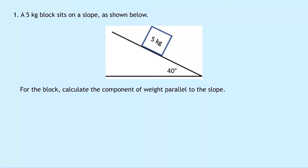Question one says that a five kilogram block sits on a slope as shown. Calculate the component of weight parallel to the slope. You'll see we've got an angle of 40 degrees for the slope and the mass of five kilograms. We're asked to calculate the component of weight parallel to the slope — that would be the component of weight acting down along the slope.